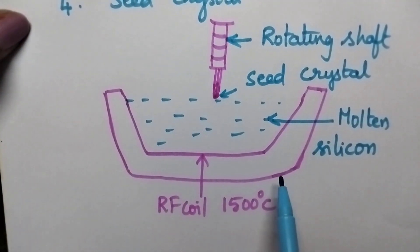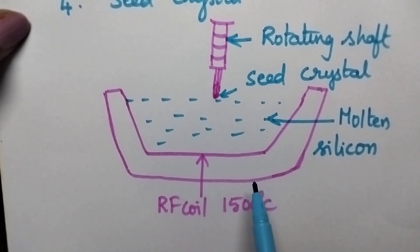Initially, the crucible is filled with the silicon and it is heated to 1500 degree centigrade with the help of RF coil. Then, the silicon will be present in the molten state.